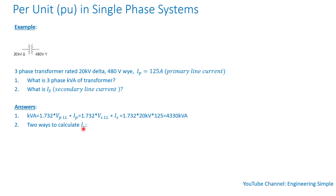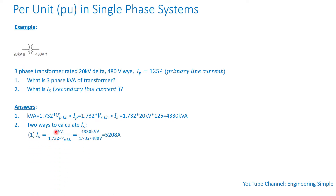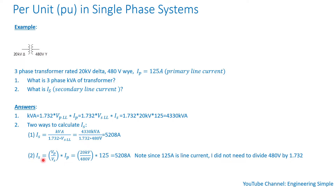There are two ways to calculate the secondary line current. Method one: use kVA of the three-phase system divided by (√3 times the line-to-line voltage of the secondary). So 4,330 kVA divided by √3 divided by 480 V equals 5,208 amps.